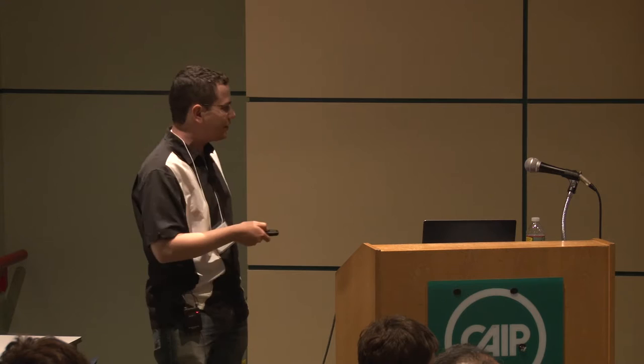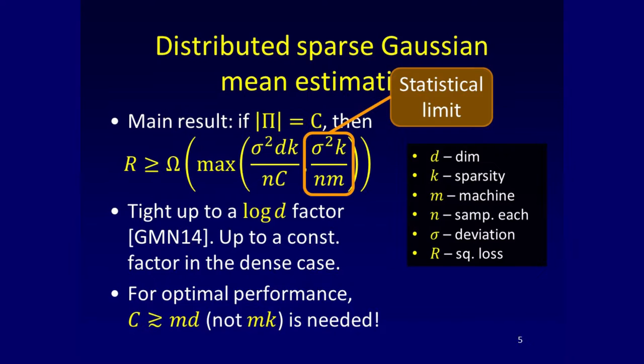For optimal performance, the easiest way to interpret this result is that you need communication of something like M times D — the number of machines times the ambient dimension. This is pretty bad. Specifically, it means that sparsity is not helpful. If you make the two terms equal to each other, that's what you get, and this is tight up to logarithmic factors.